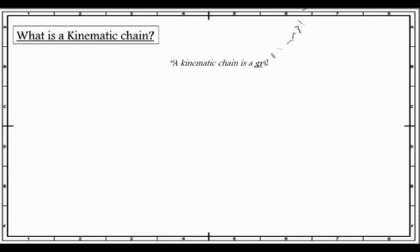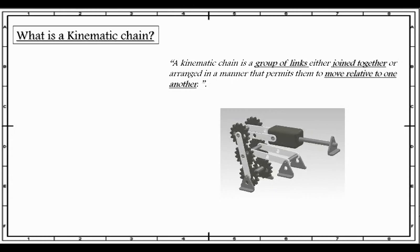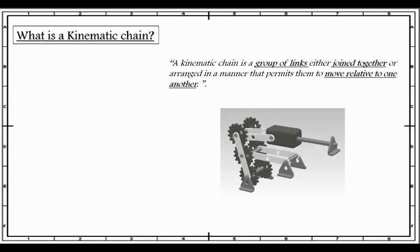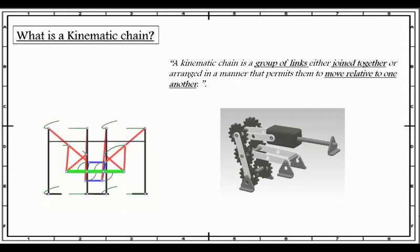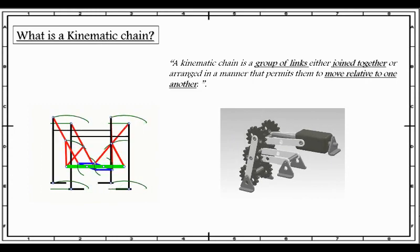First thing first, let us see what is a kinematic chain. A kinematic chain is a combination or assembly of joints and links. It is a group of links either joined together or arranged in a manner that permits them to move relative to one another. In other words, when several links are movably connected together by joints, they are said to form a kinematic chain. As we can see in this figure, all the links are arranged in such a manner that permits them to move relative to one another.